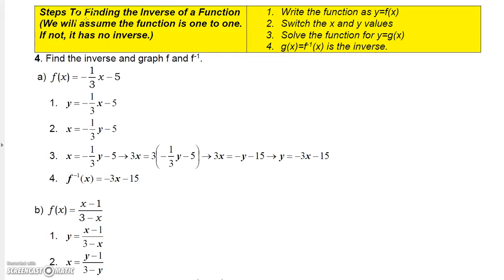Let's talk about the steps to finding the inverse of a function. We'll assume the function is one-to-one, because if not, it has no inverse. Step one: write the function as y equals. Step two: switch x with y and y with x. Step three: solve the new equation for y. What you get is the inverse of the original function.